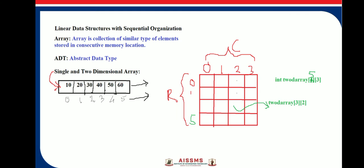A two-dimensional array consists of rows and columns. For example, consider 'integer twoArray' where integer is the data type and twoArray is the name. The size is written as row by column, where r is the row and c is the column. For instance, 'integer twoArray[5][3]' gives a 5 by 3 array.